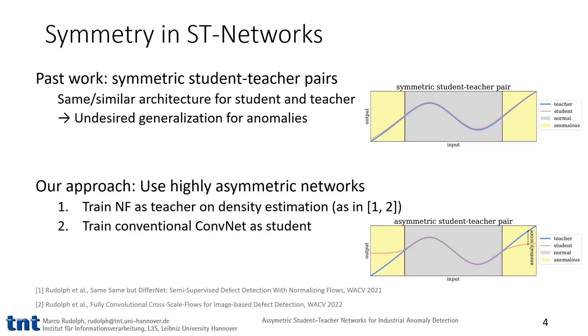This motivates us to use asymmetric student-teacher networks. As a teacher, we use a normalizing flow, which is trained to estimate the density of the defect-free data. As a student, we use a conventional CNN.